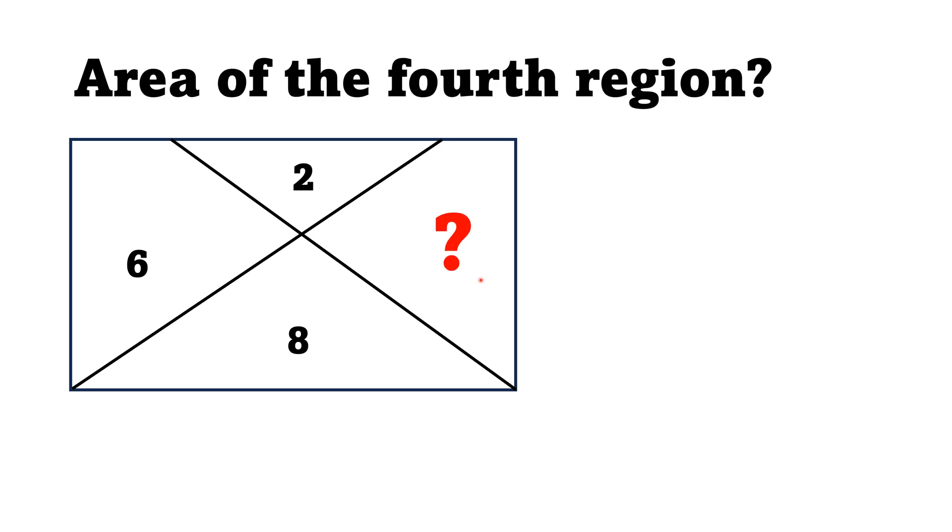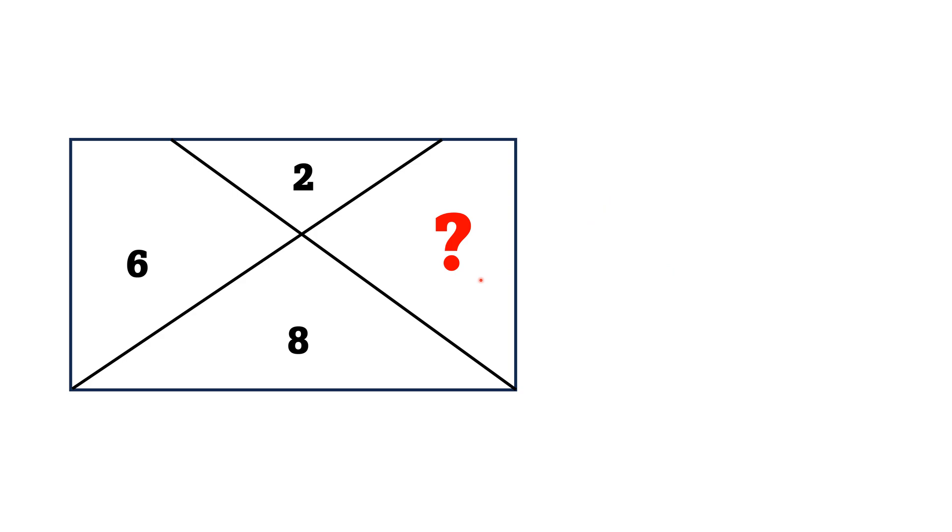This figure is not 100% true to scale. Let's move towards the solution. First of all, we consider these two triangles having areas equal to 2 square units and 8 square units.